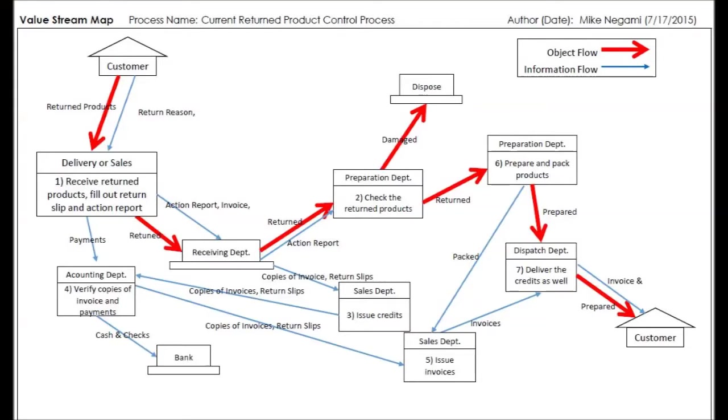Let's look at an actual value stream map. In the diagram, the red-bold lines are the flow of objects, and the blue lines are the flow of information.